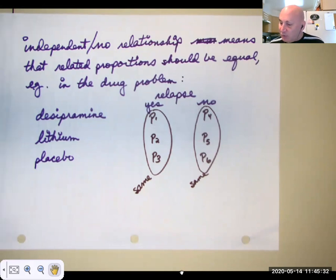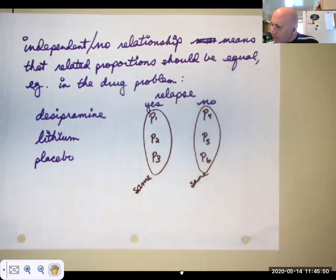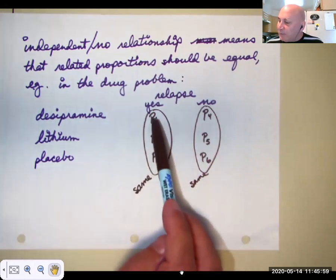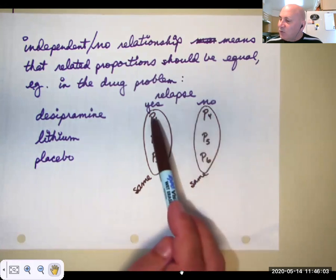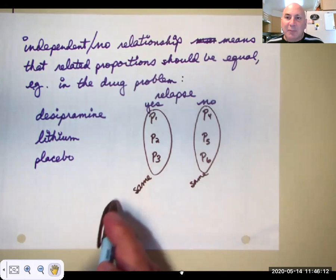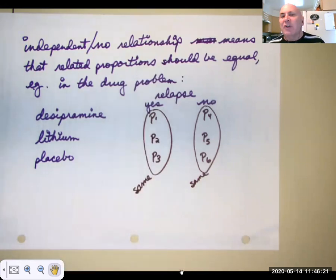When we say that the two variables are independent or that there's no relationship, it means that the related proportions should be equal, not that everything should be 50%. We had a 58%, a 25%, and a 16%. That doesn't mean the relapse rate should be 50-50. That means that these three counts, if you take their proportion of the total, are those proportions the same? That's really what we're doing when we conduct the chi-squared test for independence. We're seeing if those three proportions are the same. As we always do with chi-squared, we're looking at the proportions but we're doing the actual counts.